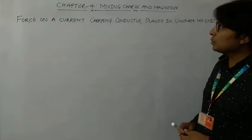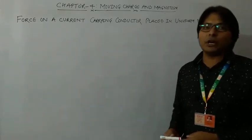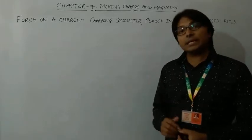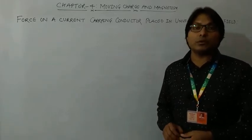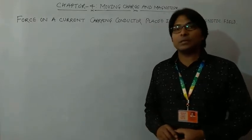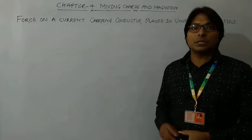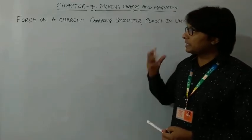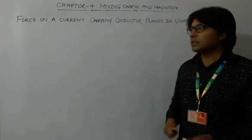We will be deriving the formula of force on a current carrying conductor when it is placed in a uniform magnetic field. Let us first discuss why, or from where, this force comes when a current carrying conductor is placed in a magnetic field.